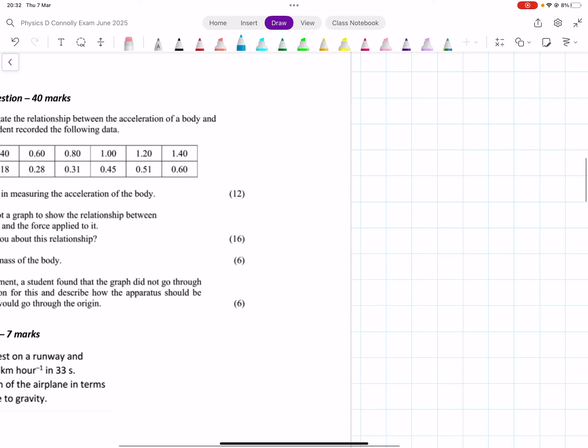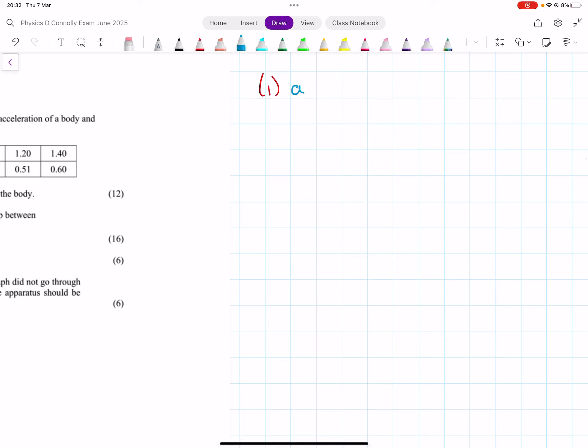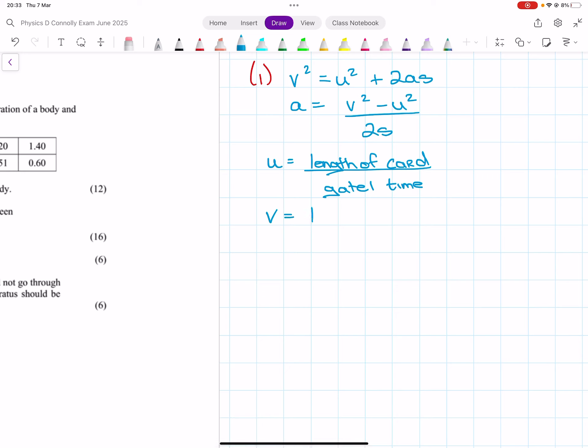Okay, so I'm just going to label this, and then label this. So, how do we do acceleration? We use v squared equals u squared plus 2as, but rearranged. So, v squared minus u squared over 2s. u is the initial velocity, which is the length of card divided by the gate 1 time.